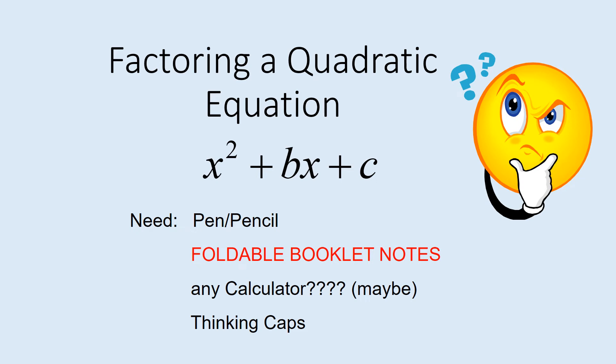Hello, Algebra 2ers. We are going to be continuing factoring quadratic equations, or factoring things with an x squared term in them, just like we have here when we have an x squared plus some x plus some constant. What you're going to need today is a pen or a pencil, those foldable booklet notes that we have, and maybe a calculator, and you're definitely going to need your thinking caps.